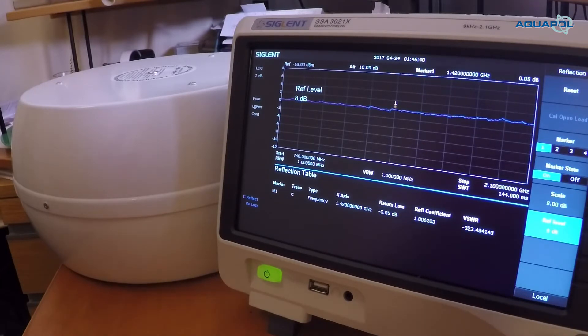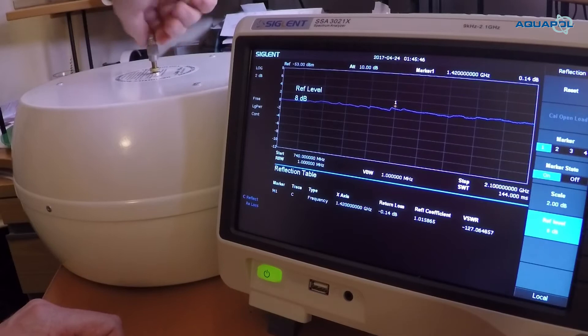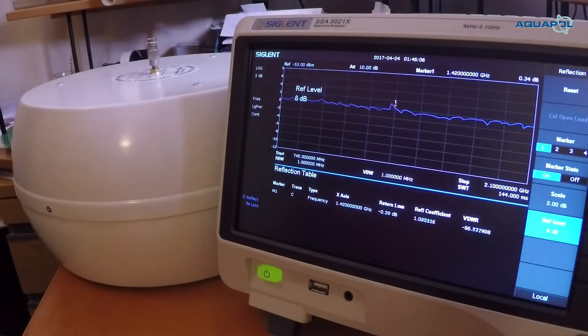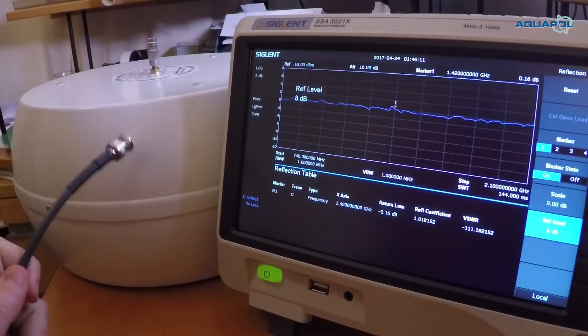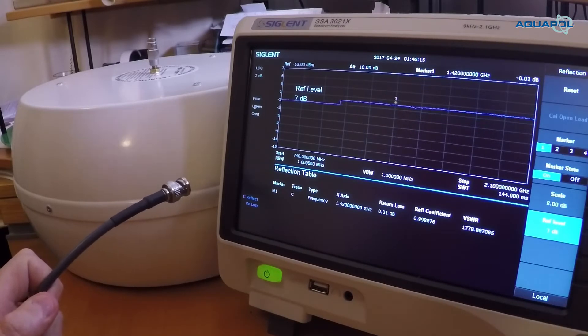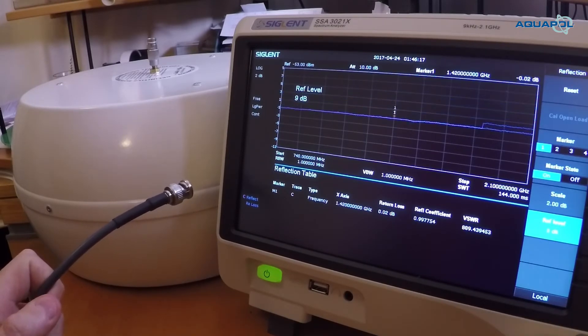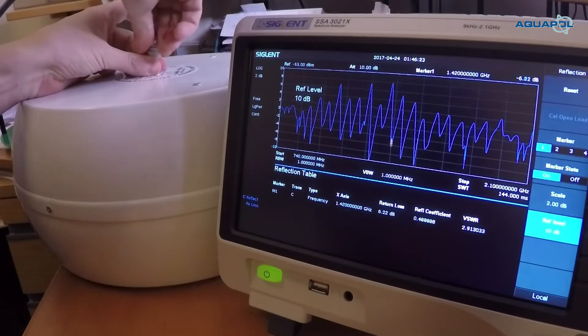Basically a flat line. I'm going to screw the pin into the unit to make a solid contact. I'm going to actually do the calibration again. I'm going to reset and zero the line.